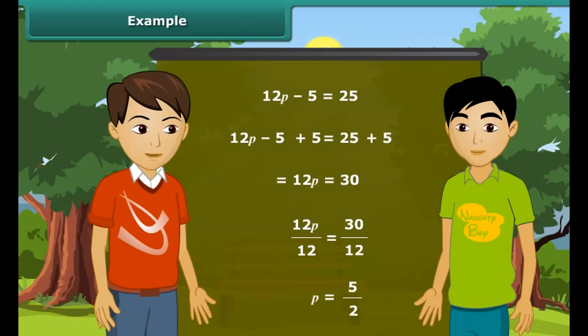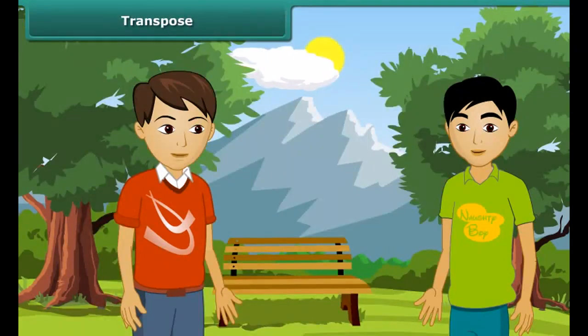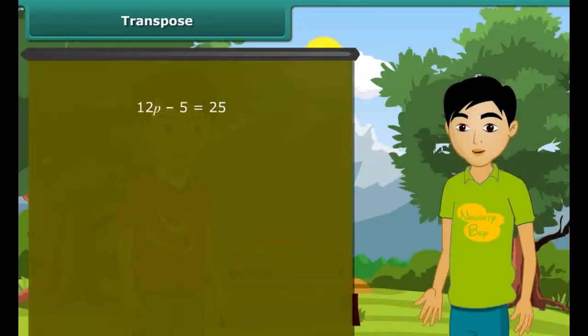Do you know that we can solve these problems by transposing also? What is transposing? Come, I will explain you. Transposing means changing side. For example, in this example, we have changed the side of 5. And when we transpose any number, we change its sign. Plus becomes minus, multiplication becomes division. And now by transposing 12, P becomes 30 divided by 12, which is equal to 5 upon 2.